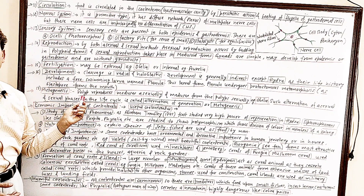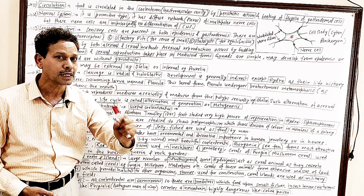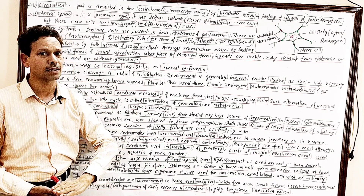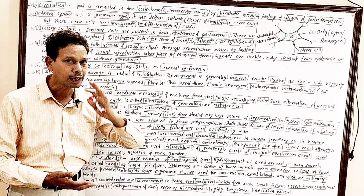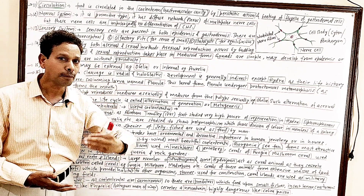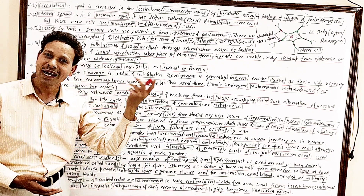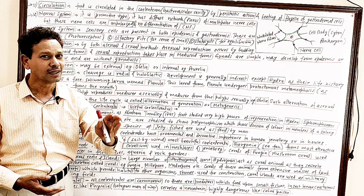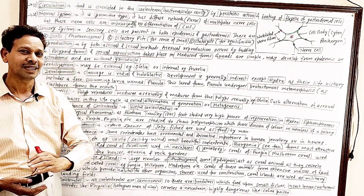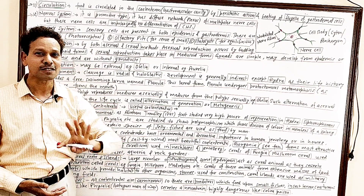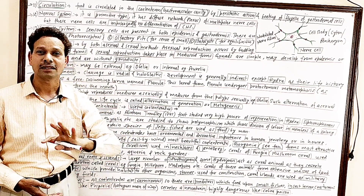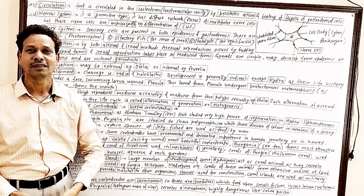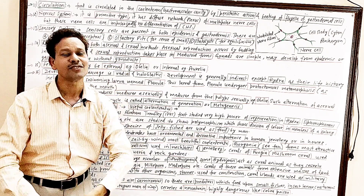Another important point for all competitive exams and BSc final year students: metagenesis. In cnidarians, the polyp reproduces asexually to give rise to the medusa, and the medusa reproduces sexually to give rise to the polyp. This is alternation of generations — both polyp and medusa alternate in their life cycle — and this phenomenon is called alternation of generation or metagenesis.